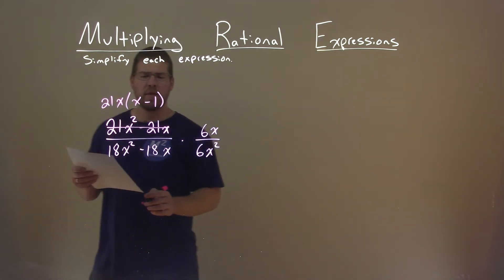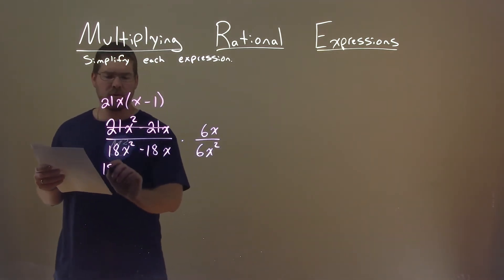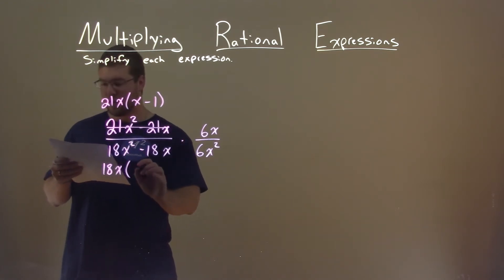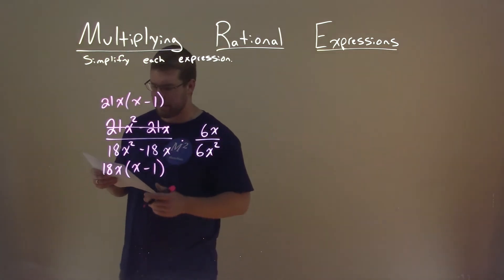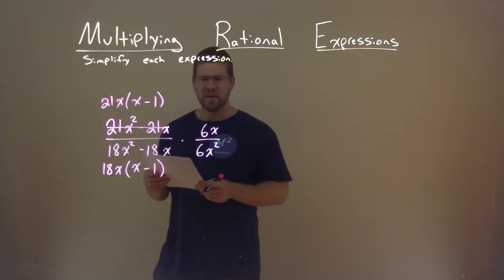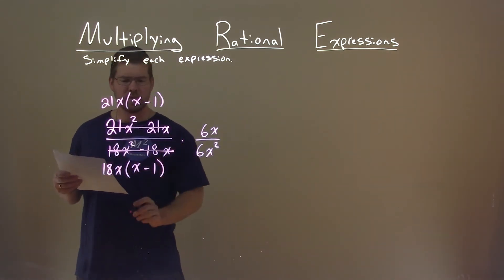I'm going to do the same thing with the denominator. 18 goes into both parts here, as well as an x. We're left with just an x minus 1. All right. And then, that's really it for right now as far as factoring.